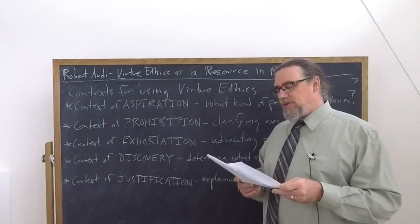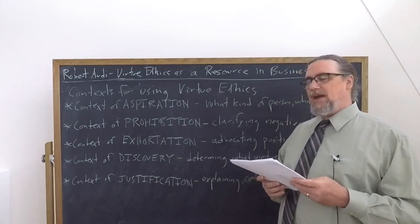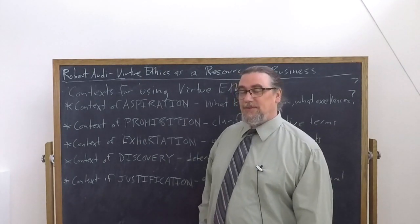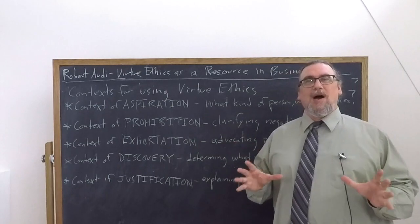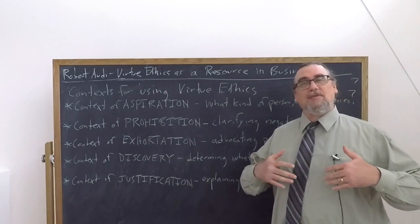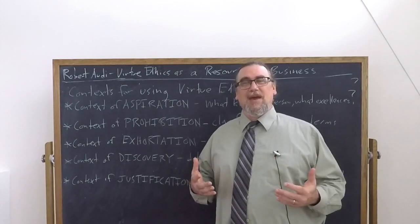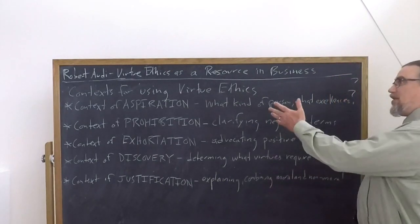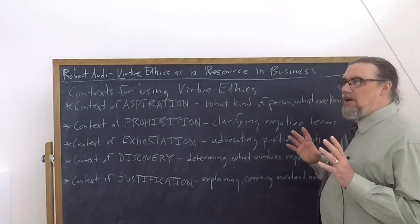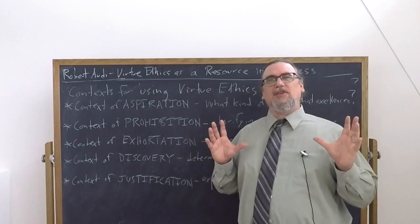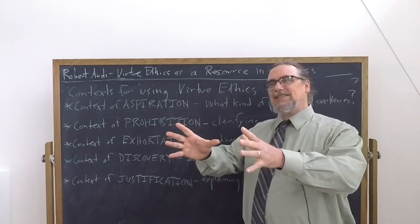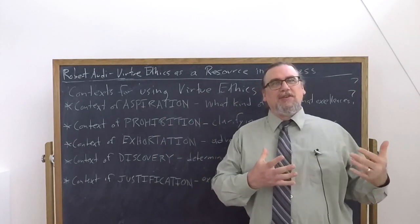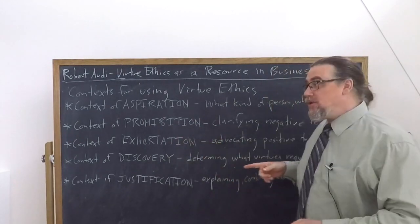He says, such labels are generally rejected even by such offenders as the perpetrators of the Enron and WorldCom scandals. Even they didn't want people saying bad stuff about them. As a matter of fact, they'd often retaliate or be very defensive and try to justify their clearly immoral behavior because they didn't want to be called that sort of stuff.